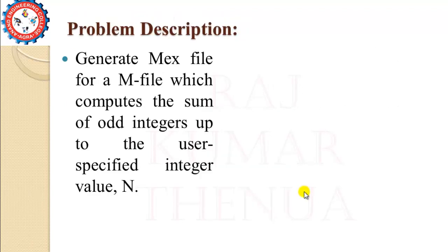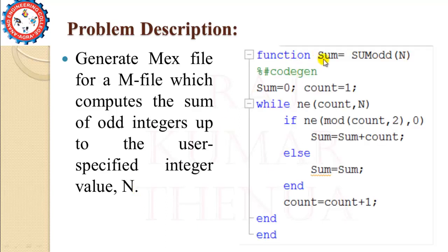To create a MEX file we first need an m-file to convert. We are considering a problem where we compute the sum of odd integers up to a user-specified integer value n. If the user provides integer value n, the m-file will calculate the sum of odd integers only. The function is called sum_odd, with one input n provided by the user and one output variable sum.